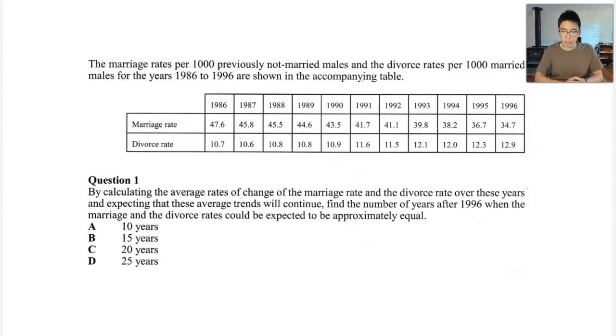So this is a question that involves extrapolation because if you look at what it's asking us to do, it's asking us to look at what's happening a number of years after 1996. And if you look at the table of data that's being provided, 1996 is the last year that we have information for. So we're being expected to predict what's happening outside of this table, which is by definition extrapolating.